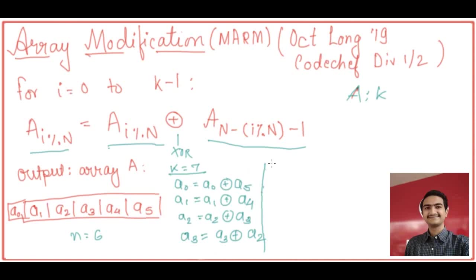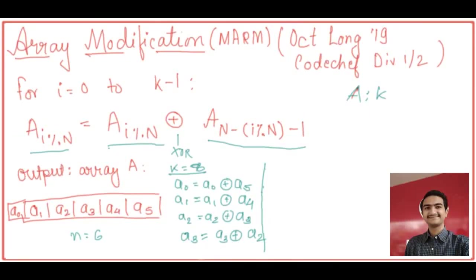Let's consider i equal to 6. If K minus 1 is equal to 7, the final value would be A of 7 mod 6, which is 1, equal to A[1] XOR A of N minus i mod N. So 6 minus 1 minus 1 gives us A[4]. Basically, you can see there is a mapping of which numbers are getting updated together — these sets are getting updated in pairs.